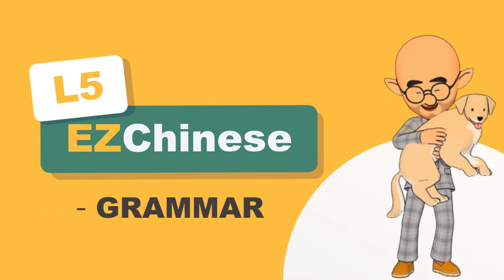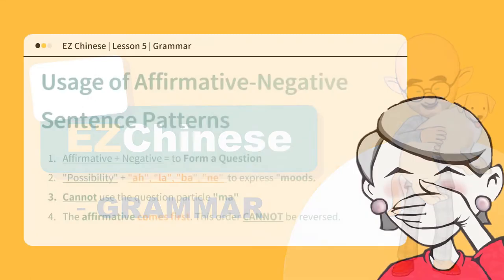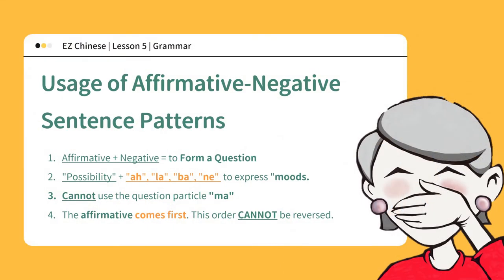Lesson 5 Grammar. Usage of affirmative-negative sentence patterns: affirmative plus negative to form a question. Modal particles at the end of the sentence are used to express moods.